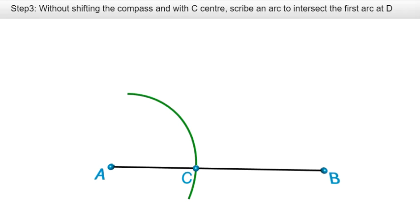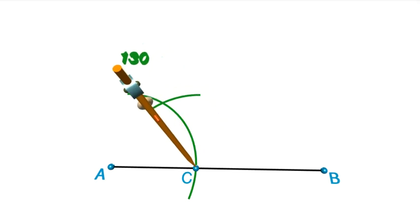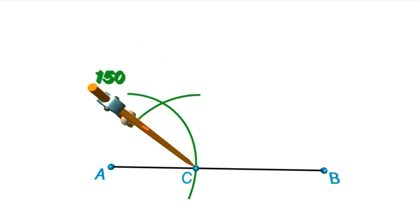In other words, the distance between the metal tip of the compass and the pencil point must not change.